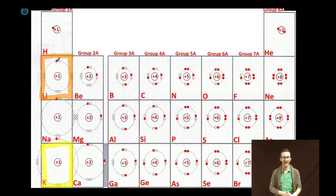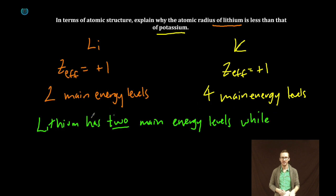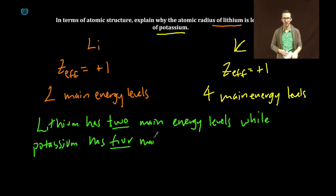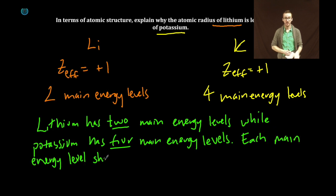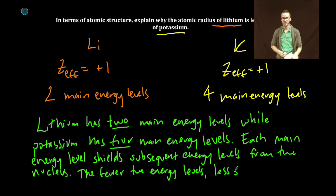So why is the atomic radius or size of lithium less than the atomic radius or size of potassium? Lithium has two main energy levels while potassium has four main energy levels. Each main energy level shields subsequent energy levels from the nucleus. Fewer the energy levels, less shielding and therefore smaller radius.